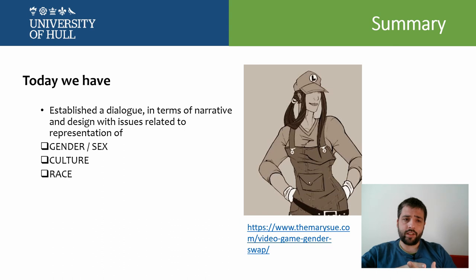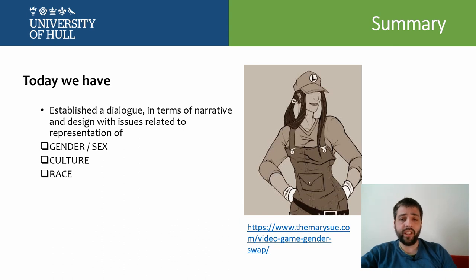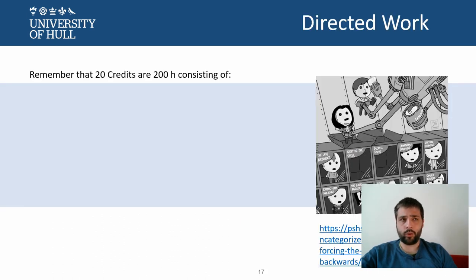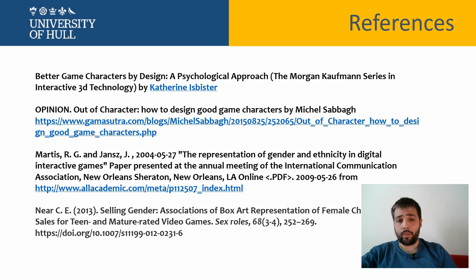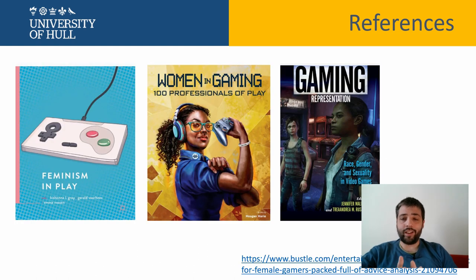Today we have tried to establish a dialogue in terms of narrative and design about why we are representing characters in different ways, and how we have to deal with complicated dilemmas in relation to gender, sex, culture, and race. As always, I recommend some activities — you have time to explore the topic in greater depth. The discussion this week is going to be based on different examples you can provide of good practice and bad practice in relation to sex, gender, and ethnic representation. Some of the references I employ here include articles with data on gender representation. That's all for today. I hope you have enjoyed this lesson, and I'll see you in the lab. Take care.